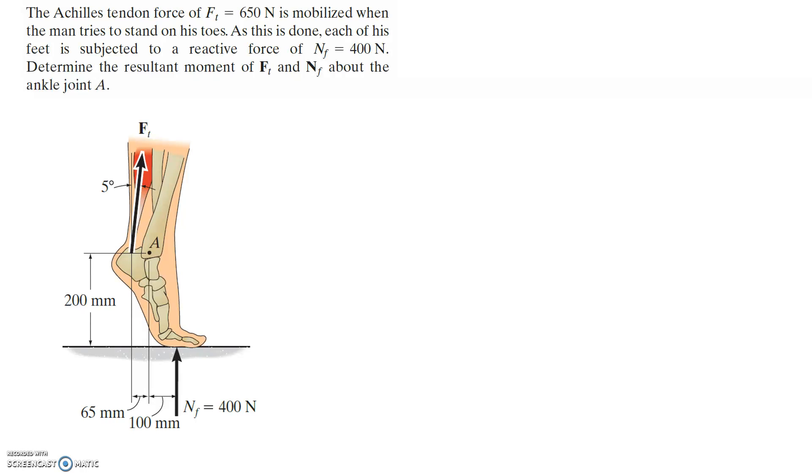The Achilles tendon force of Ft equals 650 newtons is mobilized when the man tries to stand on his toes. As this is done, each of the feet is subjected to a reactive force of NF equals 400 newtons. We're asked to determine the resultant moment of Ft and NF about the ankle joint at A.